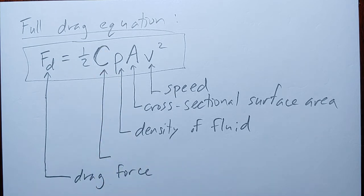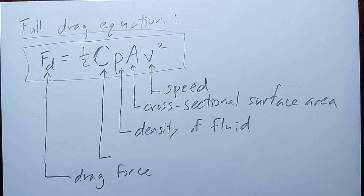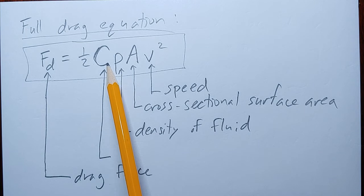The last term is C. Some of you might have thought it's not the entire story to just think about surface area, because we have the concept of aerodynamics. Cars are relatively similar in size, but if you change the shape of the hood and other parts, you can make it easier for the car to accelerate and not get slowed down by the air. That's because the shape of the object also matters, and that is encoded by the constant C.